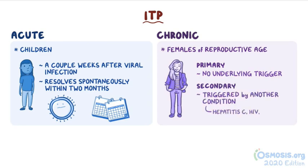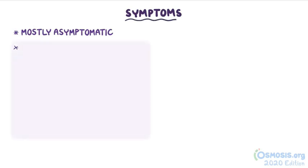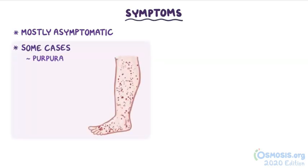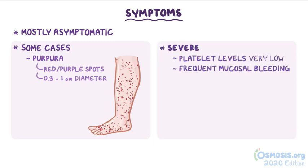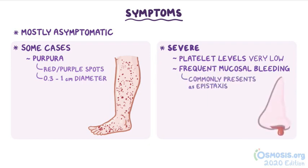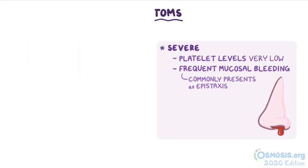Chronic ITP can also be primary, when it occurs without an underlying trigger, or secondary, when it's triggered by another condition like hepatitis C, HIV, or lupus. Most of the time ITP is asymptomatic. In some cases it can cause purpura, which are red or purple spots on the skin measuring 0.3 to 1 centimeter in diameter.